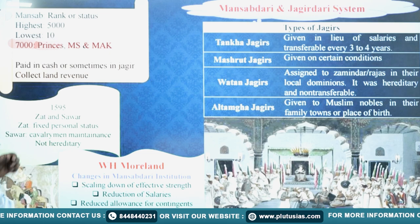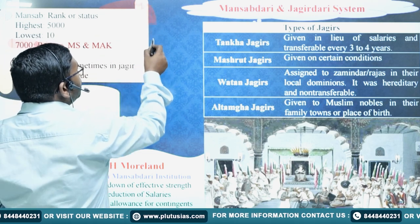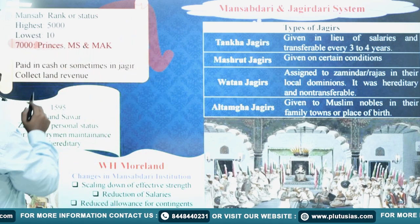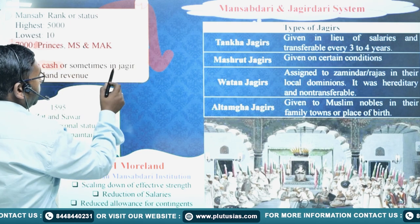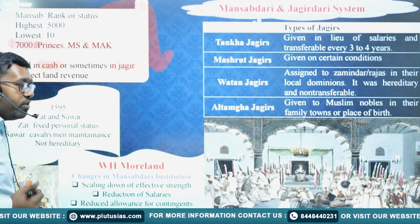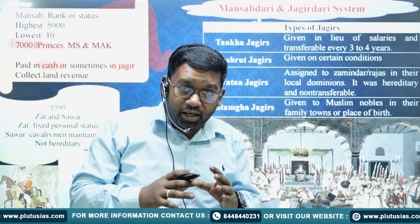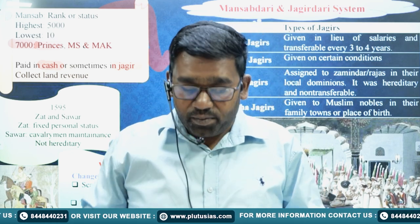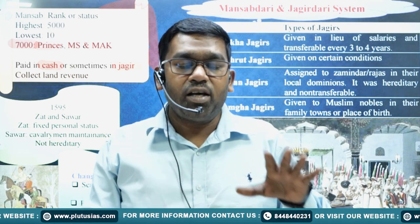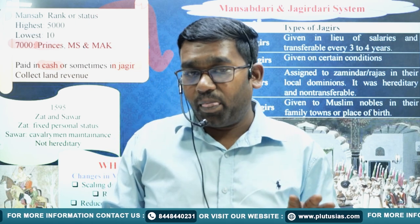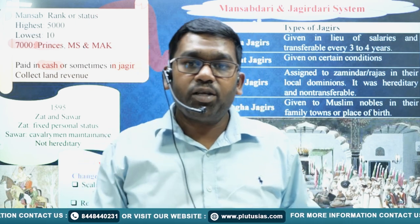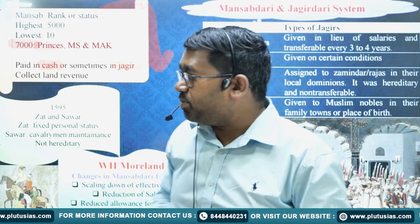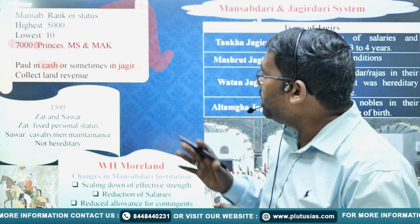All the officials who were centrally appointed were called Mansabdars. They were paid sometimes in cash or sometimes in kind, which is known as Jagir. Those top officials who were mostly paid in kind — that is, in Jagir — are known as Jagirdars. So not all Mansabdars are Jagirdars. All Mansabdars are officials holding a Mansab rank, but Jagirdars are only those top-level Mansabdars who are paid a Jagir in lieu of salary. This is the basic difference between the Mansabdari system and the Jagirdari system.